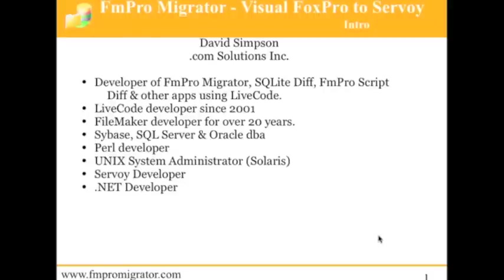During this video, I'll be showing how to use FmPro Migrator to perform automated Visual FoxPro to Servoy conversions. FmPro Migrator was originally developed only to perform FileMaker database data migration projects. However, over the last eight years, it has been enhanced to convert FileMaker Pro, Microsoft Access, and most recently Visual FoxPro applications into Servoy. You can think of FmPro Migrator as being not just one tool priced at $200 for the basic product, but actually including a family of bundled tools. I'll show each of these tools during my demo.